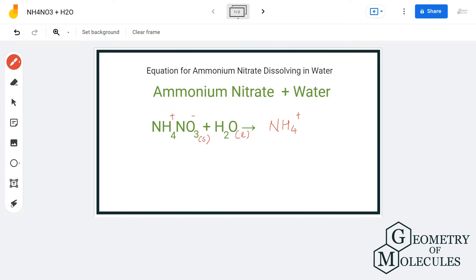Let's write these ions on the product side as well. So we have NH4 plus and NO3 minus. Now these ions dissociate.